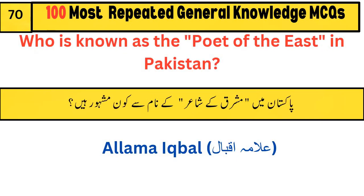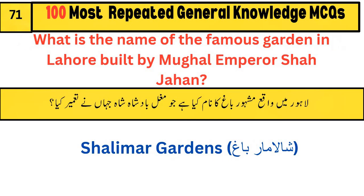Who is known as the poet of the East in Pakistan? Allama Iqbal. What is the name of the famous garden in Lahore built by Shah Jahan? Shalimar Gardens.